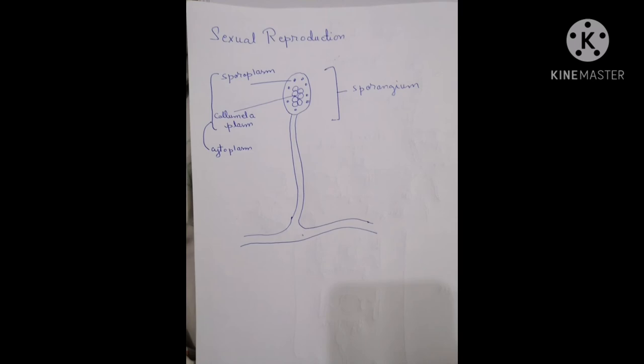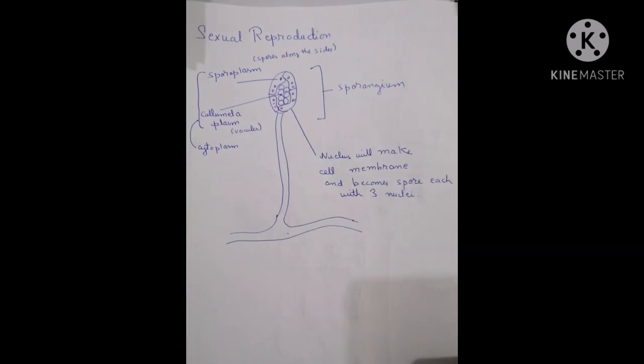While spore forms sporoplasm. Nuclei will make cell membrane across each and become spore.